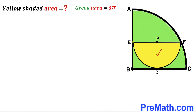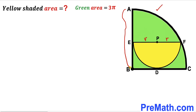I'm going to label radius EP as lowercase r, and radius PF as lowercase r as well. Now let's focus on the quarter circle. I'm going to label radius AB as uppercase R, and radius BC as uppercase R as well.